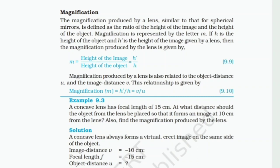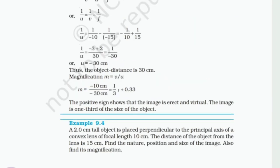Example 9.3: A concave lens has a focal length of 15 cm. At what distance should the object from the lens be placed so that it forms an image at 10 cm from the lens? Also find the magnification produced by the lens. Solution can be checked from the book. Example 9.4: A 2.0 cm tall object is placed perpendicular to the principal axis of a convex lens of focal length 10 cm. The distance of the object from the lens is 15 cm. Find the nature, position, and size of the image, and also its magnification. Solution can be checked from the book.